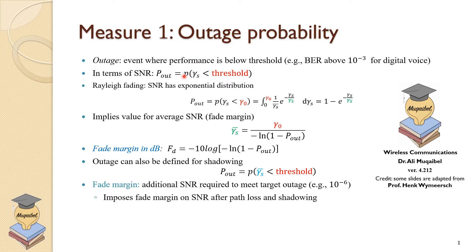The probability of being in outage equals the probability that the signal-to-noise ratio is below a certain threshold. In the case of Rayleigh fading, we know the distribution of the SNR. So the outage probability equals the probability that the received SNR is less than the threshold gamma-naught — integrating the PDF from 0 to gamma-naught. This is an exponential distribution, because if the received amplitude is Rayleigh, the power is exponentially distributed. Executing the integration gives us 1 minus the following expression.